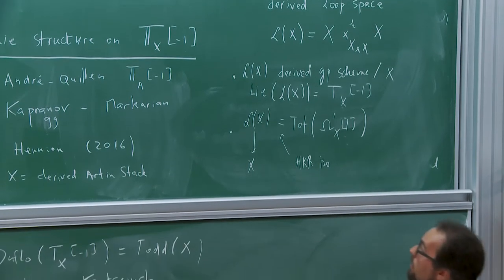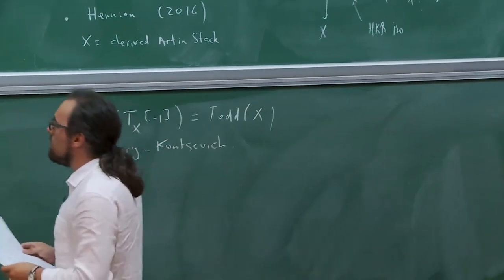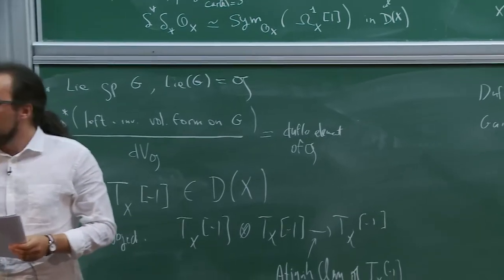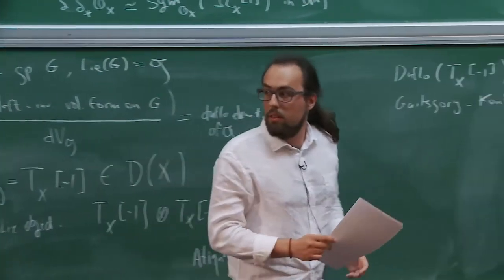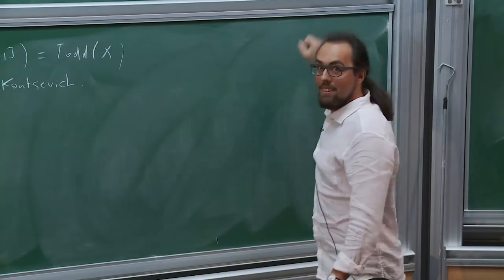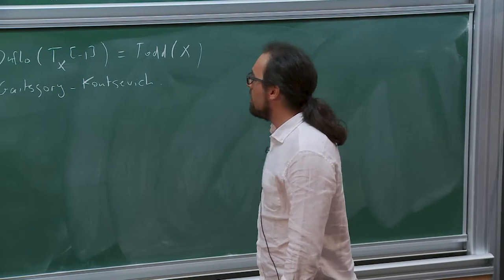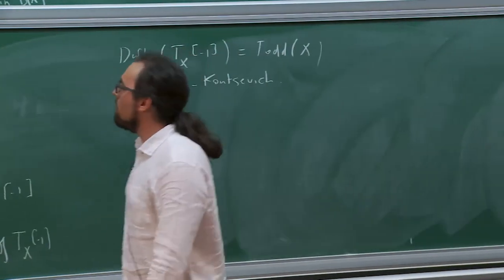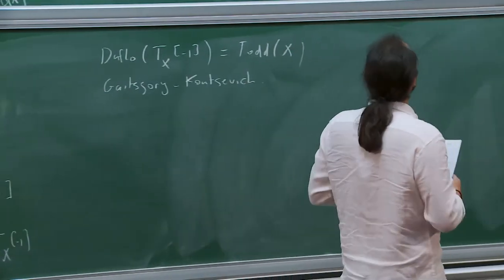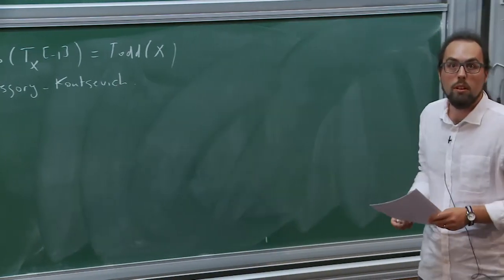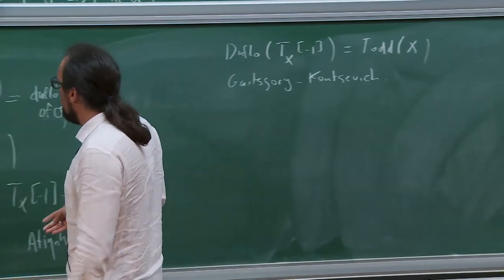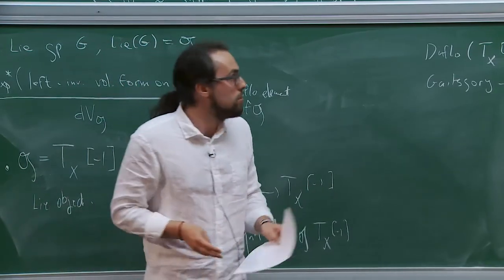What Markarian proved is that if you take G = T_X shifted by minus 1, which lives in the derived category D(X) and is a Lie object endowed with Kapranov's structure, with the Lie bracket being the Atiyah class of T_X, then the Duflo element of T_X[-1] is the Todd class of X. For interested readers, there is a recent proof of Grothendieck-Riemann-Roch using this formalism by Gaitsgory-Kontsevich, which is perhaps the most intrinsic proof you can get in the categorical framework.